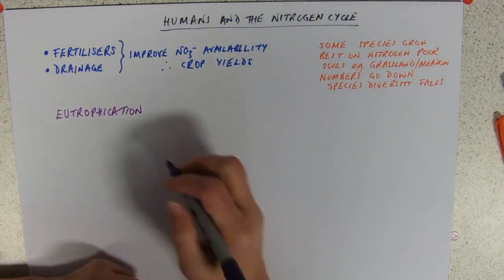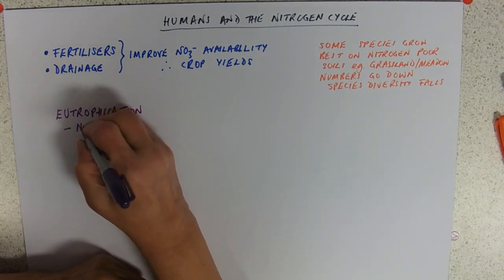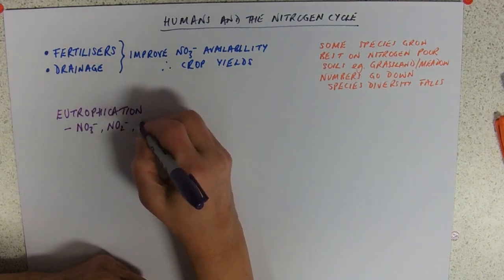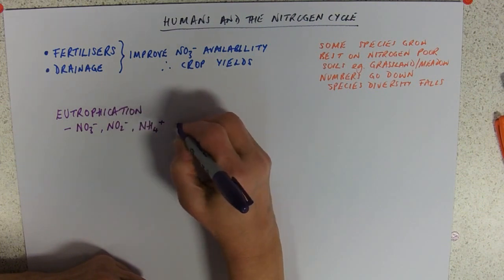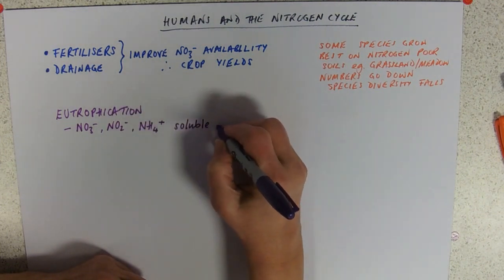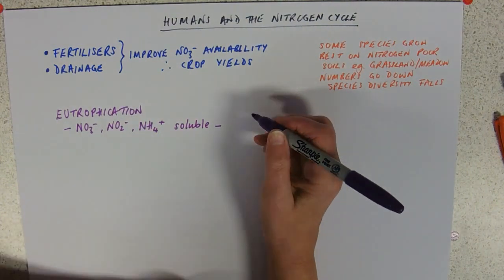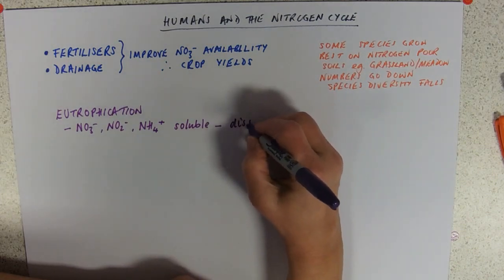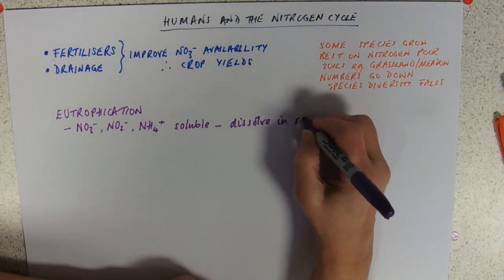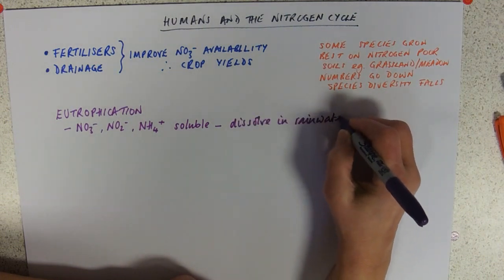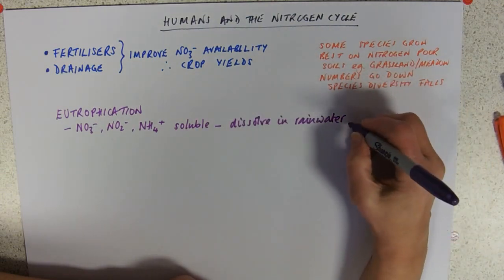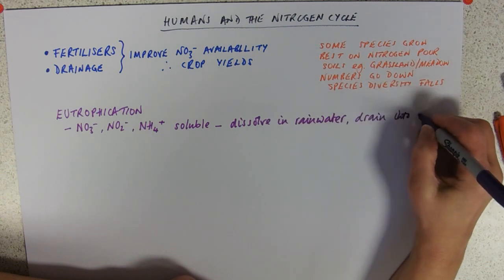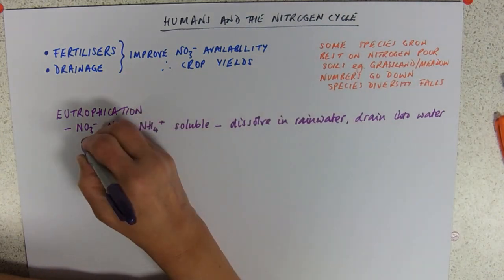All those nitrogen compounds — nitrate, nitrite, and ammonium — are all soluble in water. When it rains and the water table fills up, they dissolve in rainwater, and as the rainwater drains away, those nutrients drain with it into watercourses.